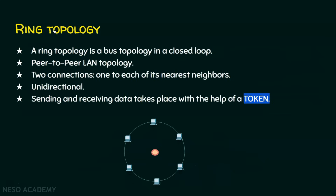Coming to the second topology — ring topology. A ring topology is like a bus topology but in a closed loop. The nodes involved are peer-to-peer LAN topology nodes, meaning there is no one superior or inferior — all nodes have equal rights. Every node will have two connections, one to each of its nearest neighbors.